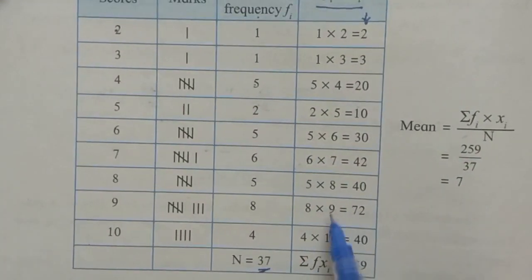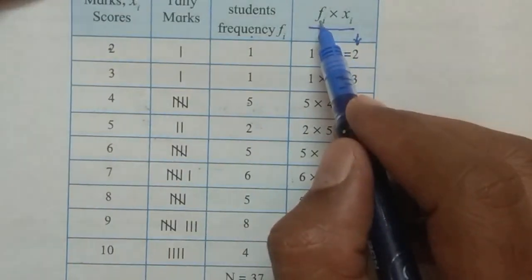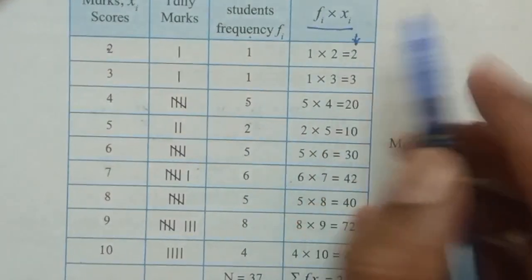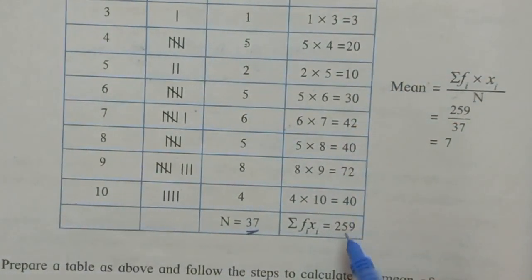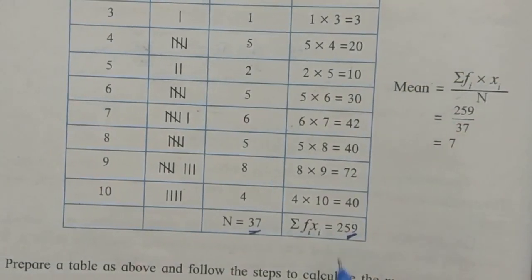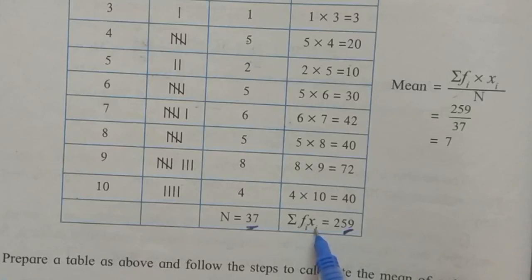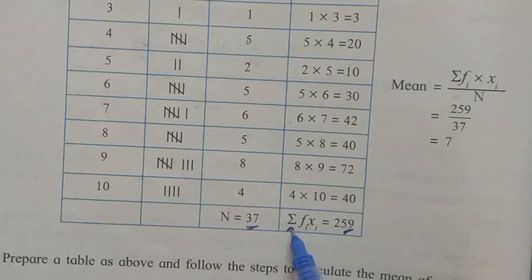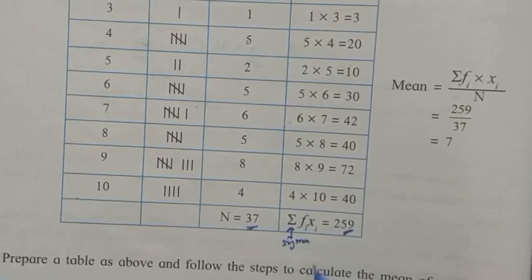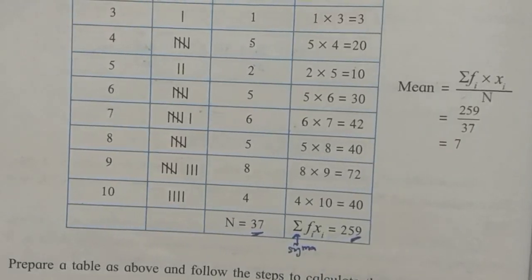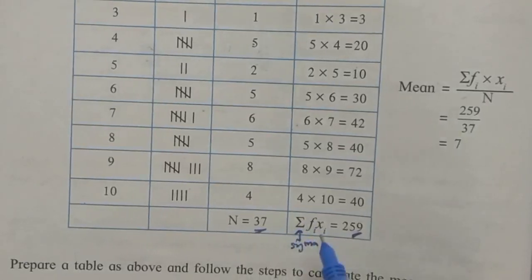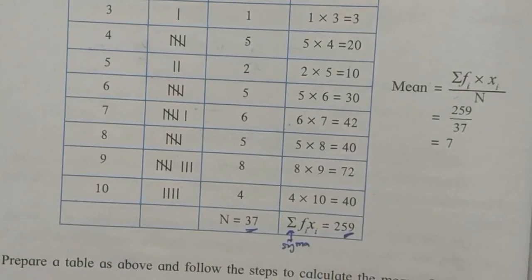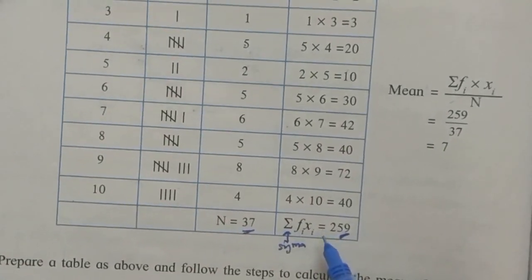The sum of the product of frequency and score is denoted by sigma — this sign is used for addition, also used in Excel. Sigma fi×xi = 259. Now, for finding the mean: here we are using the multiplication method instead of the addition method.